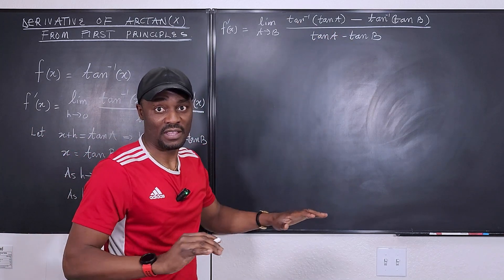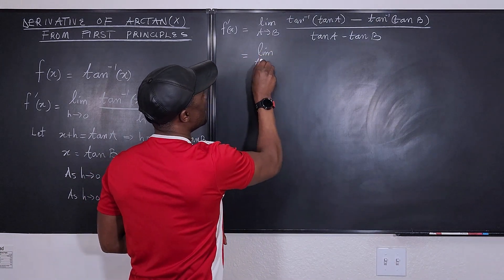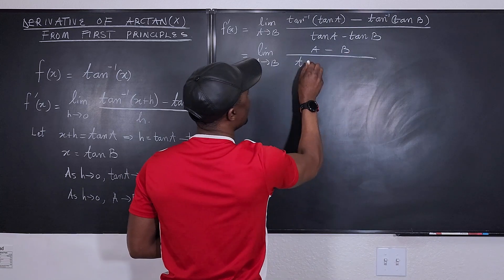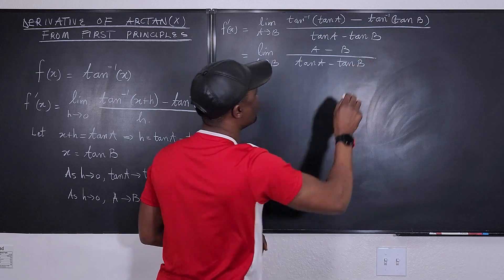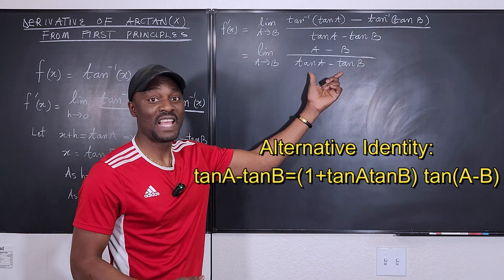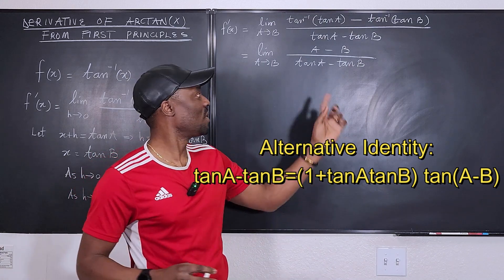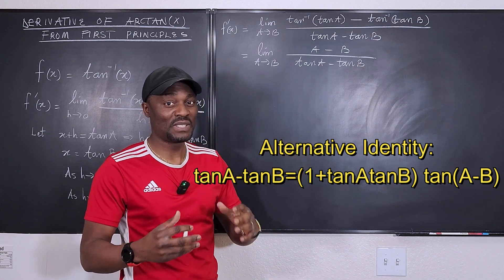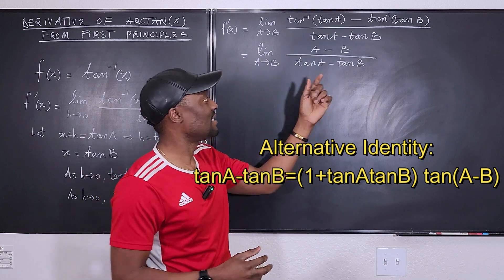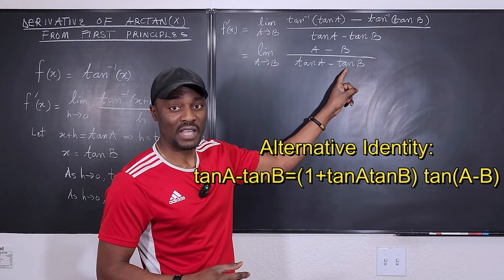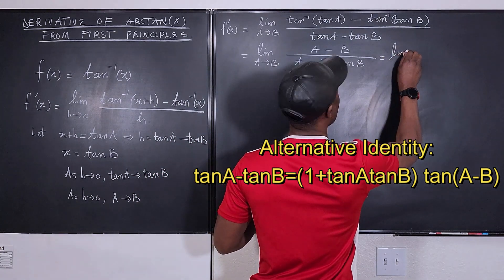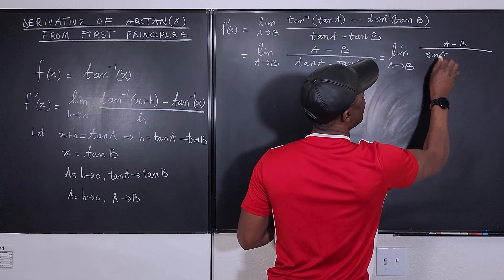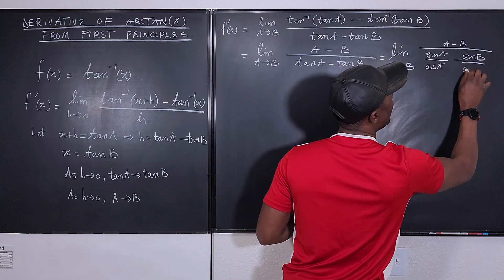Since arctan(tan(a)) = a and arctan(tan(b)) = b, the numerator simplifies to a minus b. So we have the limit as a goes to b of (a minus b) over (tan(a) minus tan(b)). Now I'll rewrite tan(a) as sin(a) over cos(a) and tan(b) as sin(b) over cos(b), giving us the limit as a goes to b of (a minus b) over (sin(a)/cos(a) minus sin(b)/cos(b)).